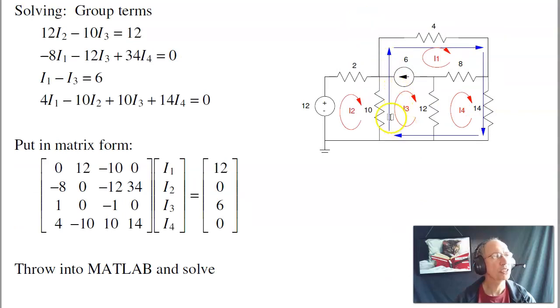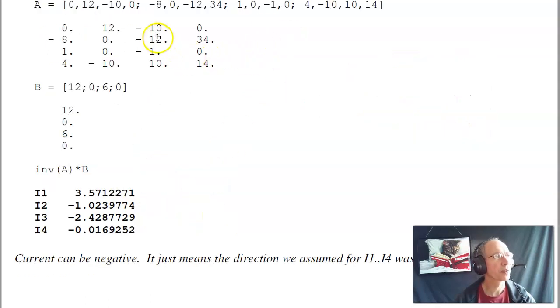Once you get your fourth equation, I can now write four equations for four unknowns. Group the terms, throw it into MATLAB, and solve. So what you should get is 3.5 amps, minus 1 amp, minus 2 amps, and negative 0.01 amp. And note, negative current is not a problem. It just means I assumed the current is clockwise. It's actually counterclockwise.